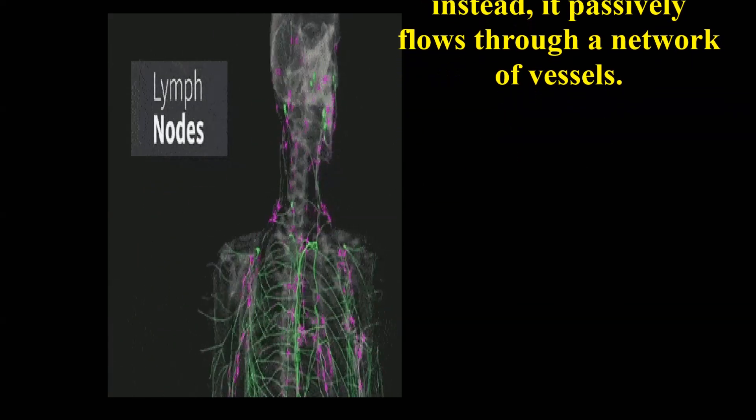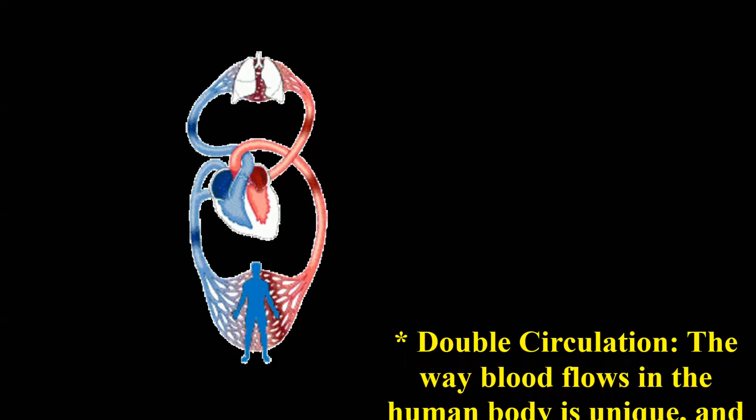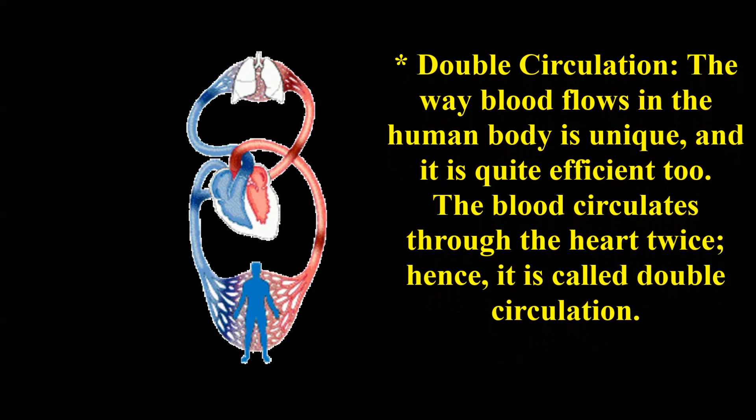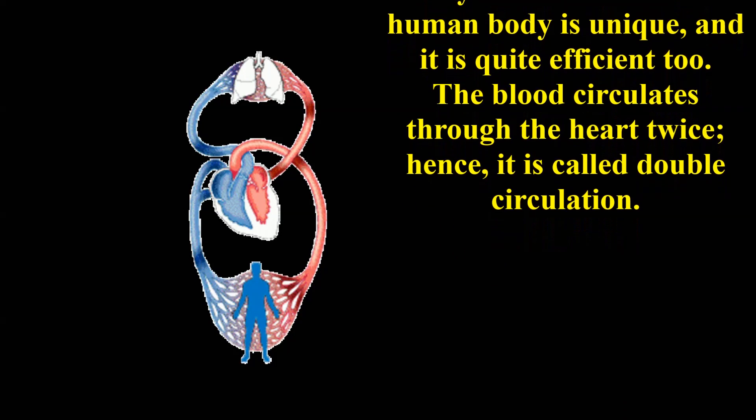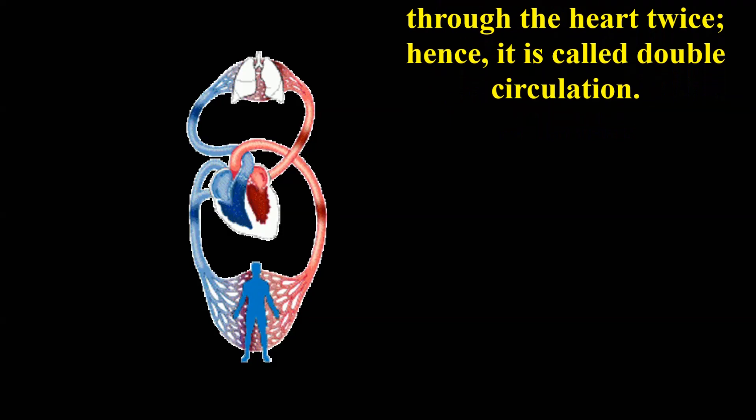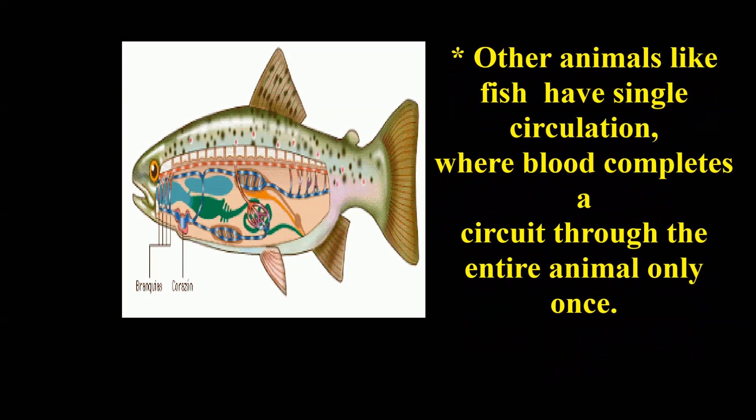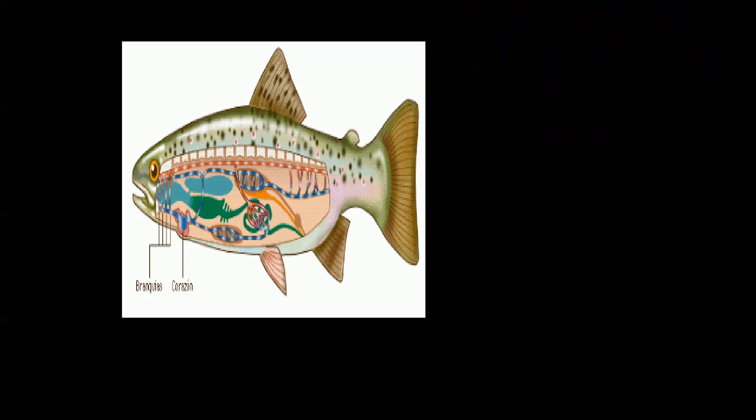The way blood flows in the human body is unique and quite efficient. The blood circulates through the heart twice; hence, it is called double circulation. Other animals like fish have single circulation, where blood completes a circuit through the entire animal only once.